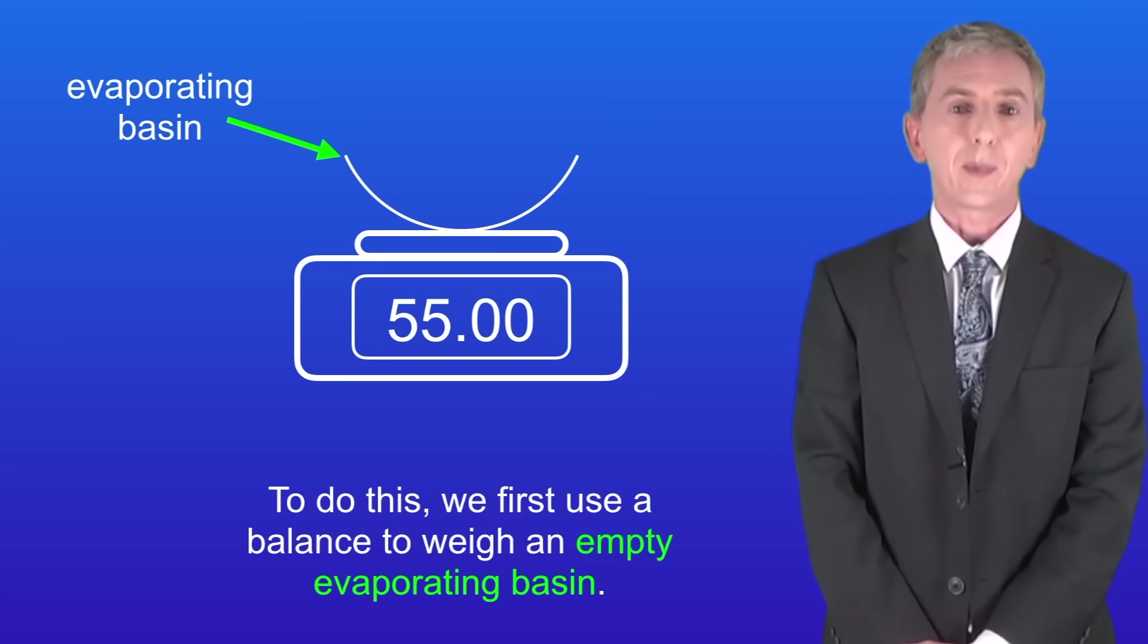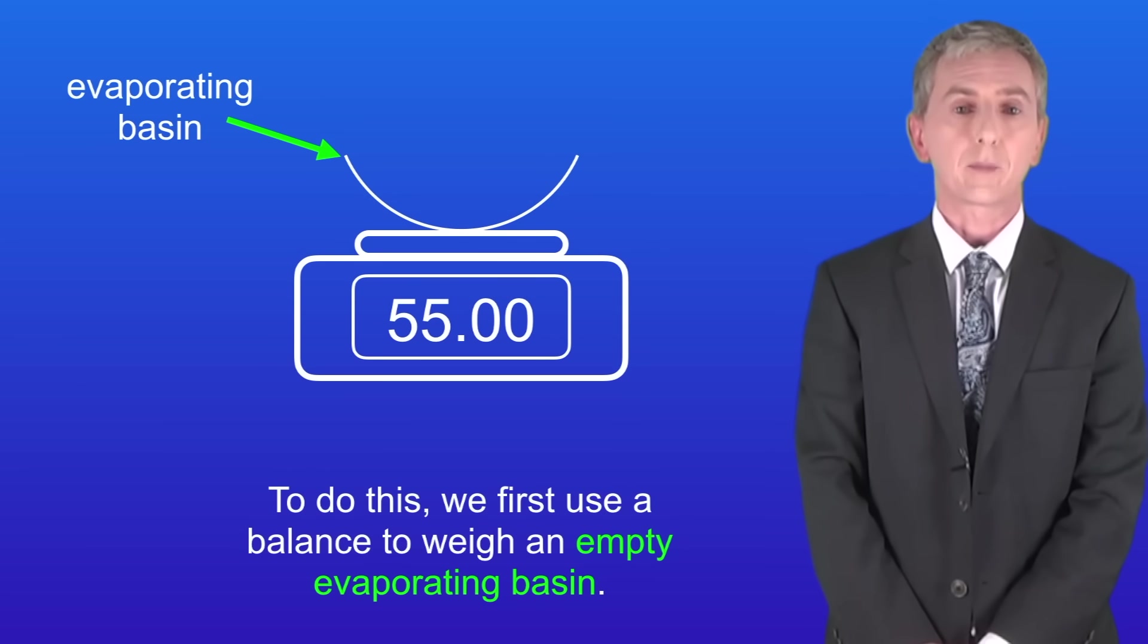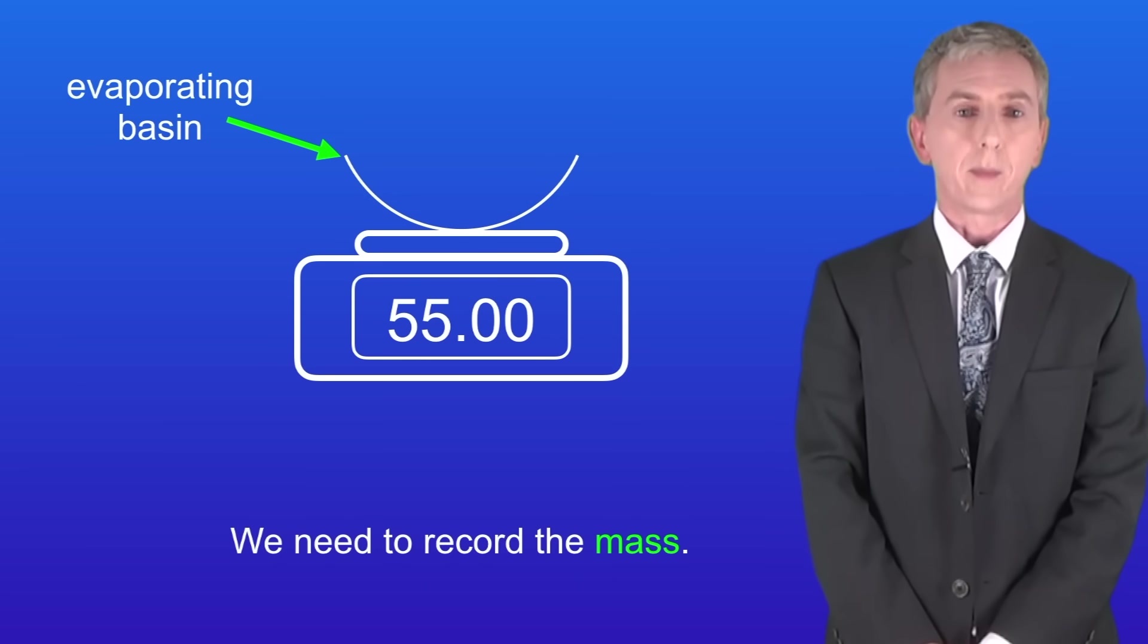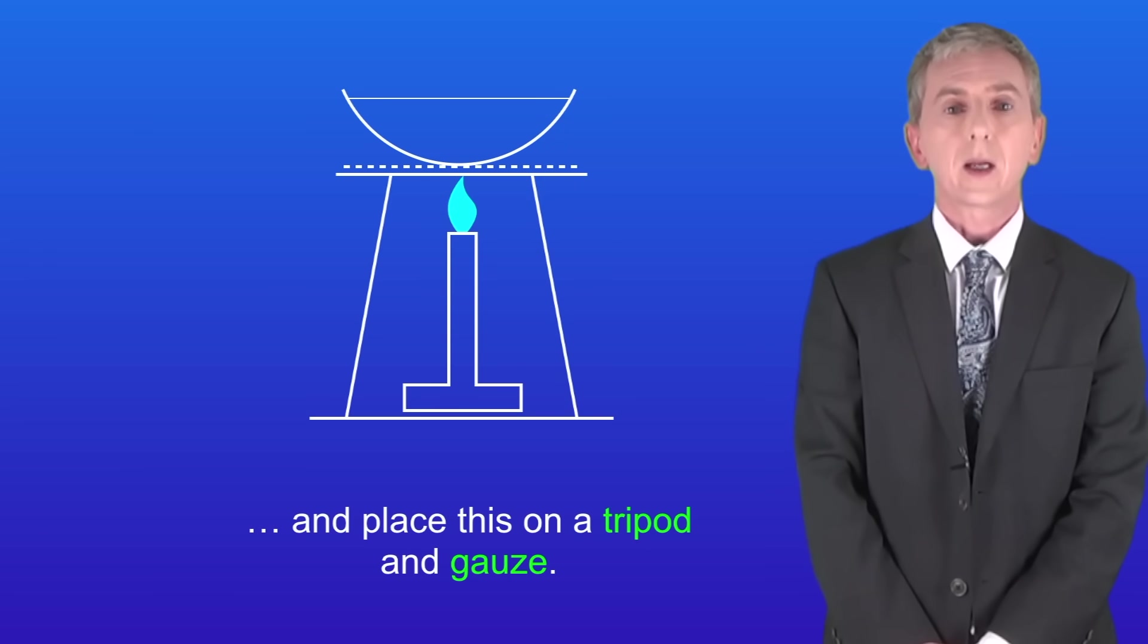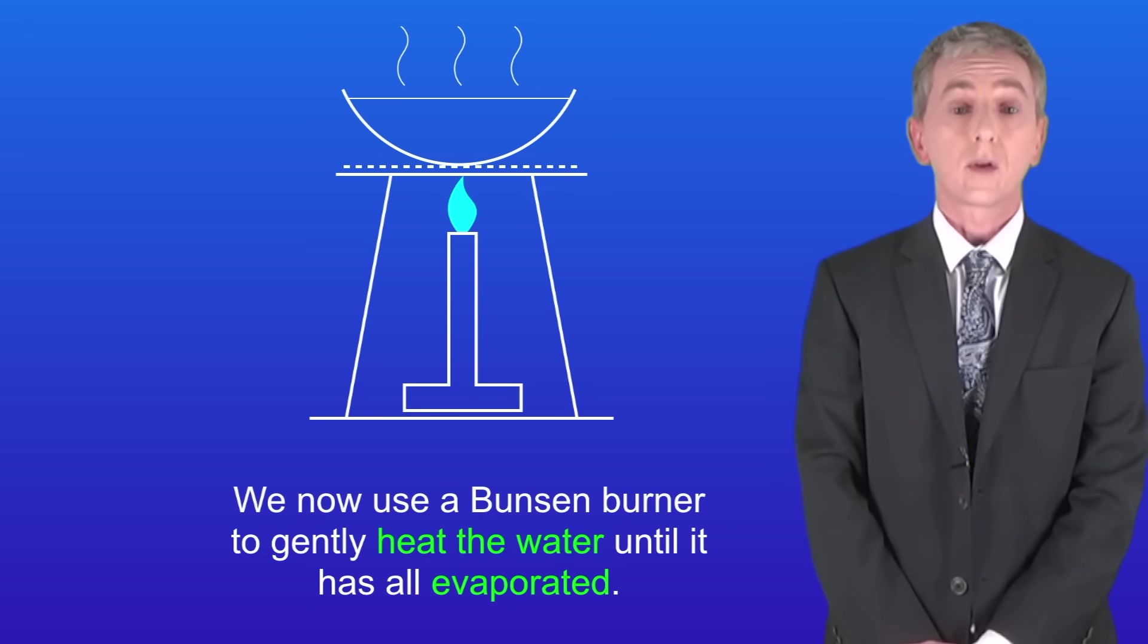To do this we first use a balance to weigh an empty evaporating basin. We need to record the mass. Now we fill the evaporating basin with our water sample and place this on a tripod and gauze. We now use a Bunsen burner to gently heat the water until it's all evaporated.